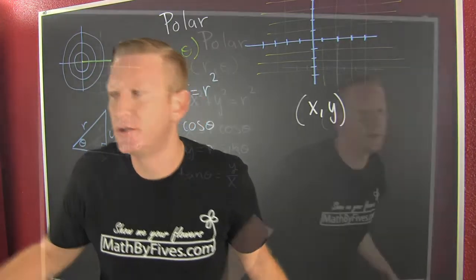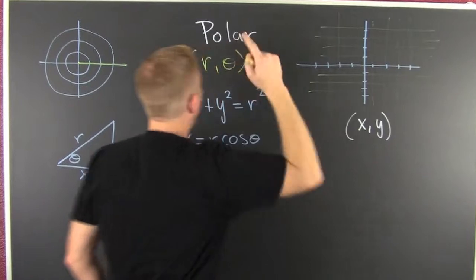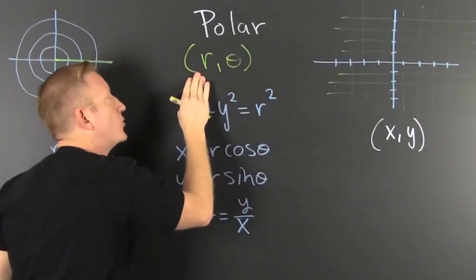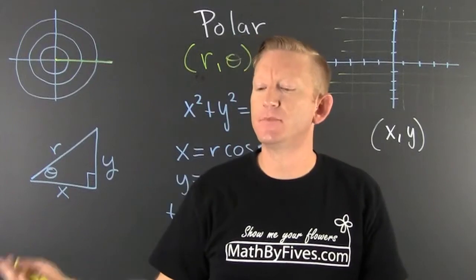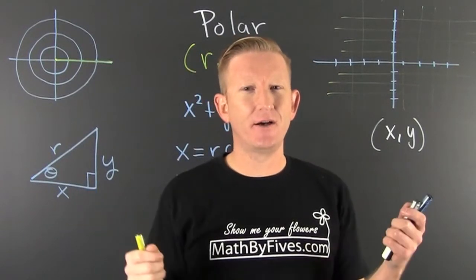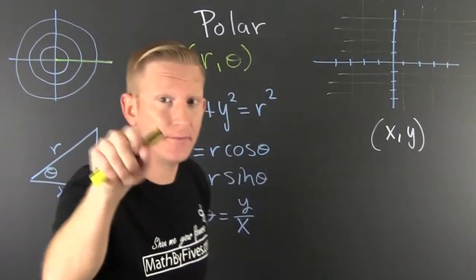Polar coordinates - I'm talking about coordinates of the form r, theta. Let me caution you that some books will do theta, r. It's rare but it happens, so beware of the book you're in. We're talking about r, theta.